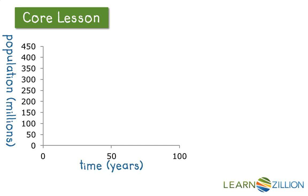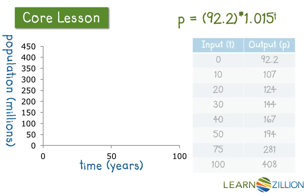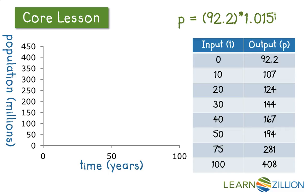The second thing we want to do is make a graph. I need to make my axes — the x-axis is time in years and the y-axis is population in millions. I'll plug in various inputs using my calculator to find the output population, then plot those points onto the graph. At first it doesn't seem like the population is growing by an increasing rate, but as we progress in time you can see a curve forming which represents our exponential growth.